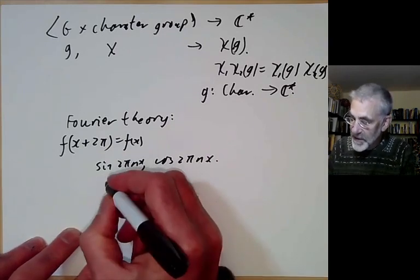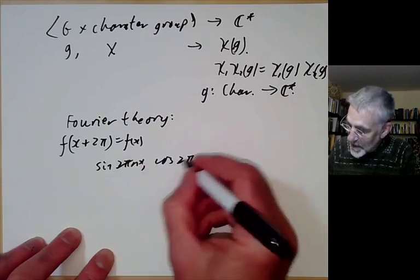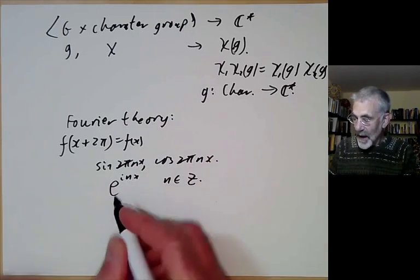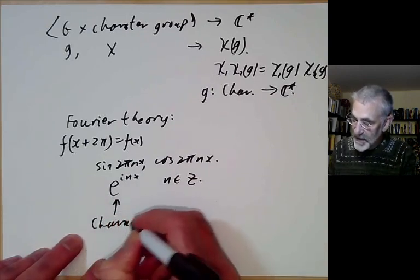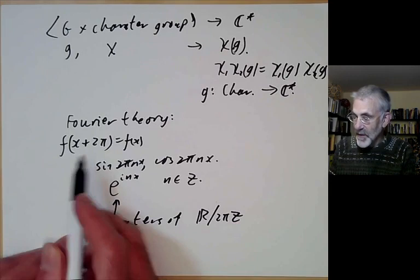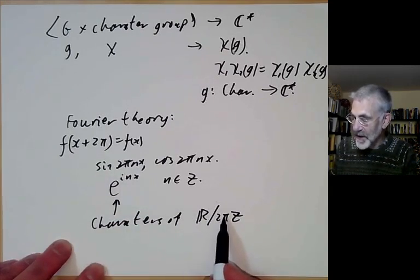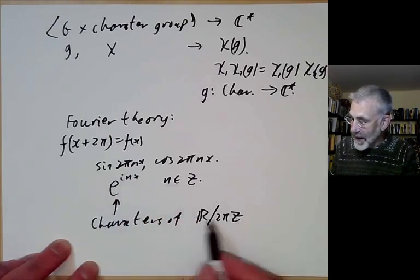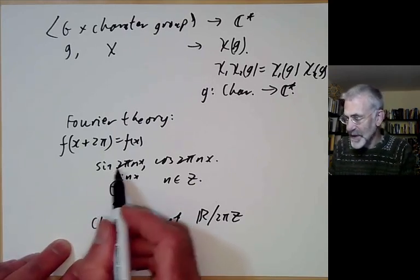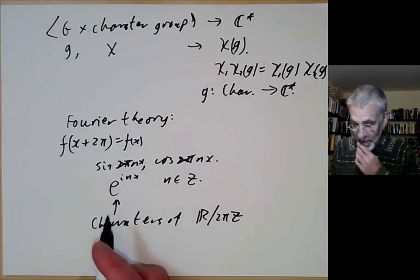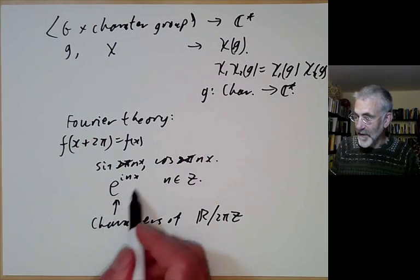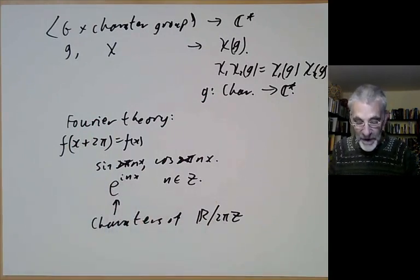Instead of using sines and cosines, it's often easier to use e to the inx for all integers n. These functions e to the inx are just the characters of the group of reals modulo 2pi Z. Periodic functions are functions on the reals modulo 2pi Z, and the characters are these exponentials, which are more or less the same as sines and cosines. You should think of the characters of a finite abelian group as analogous to these functions e to the inx.